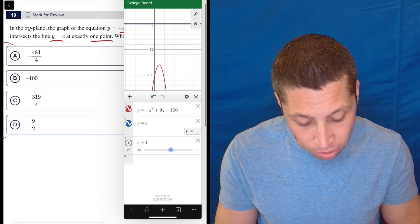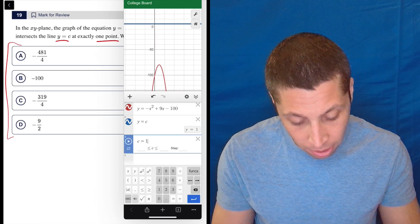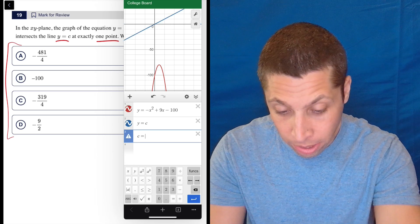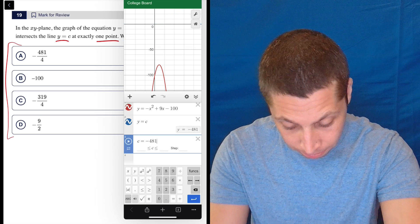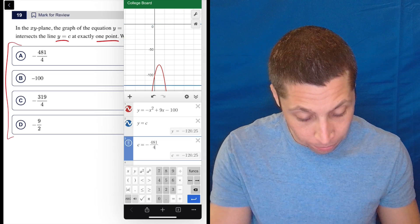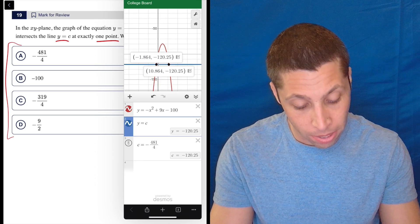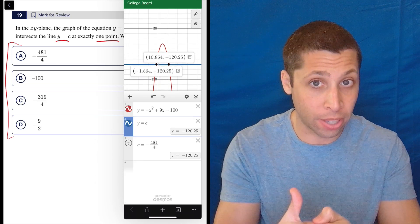So now let's change the c to these different things. So let's try a. So negative 481 divided by 4. Nope, that clearly has two solutions. Hits twice. That's what we're asking for, right? These things are intersecting.